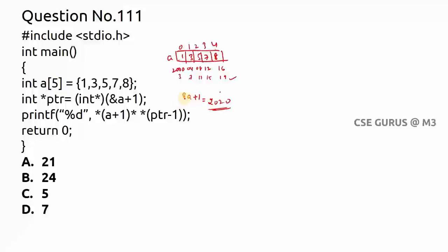So ampersand a plus one gives the next address after all array allocations are complete. That value, 2020 in our example, is assigned to ptr. The array occupies 2000 to 2019; the next address is 2020, so ptr equals 2020.